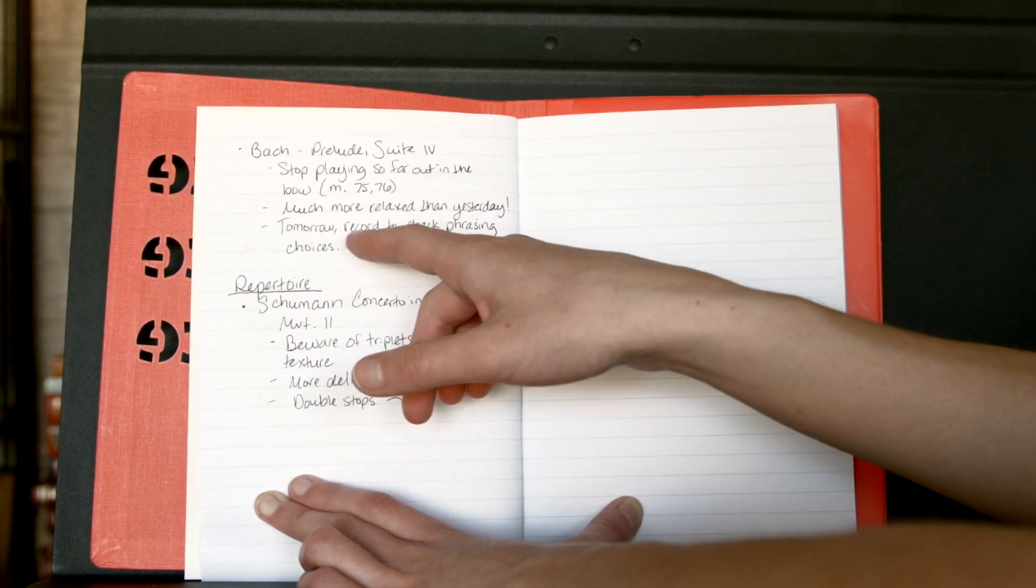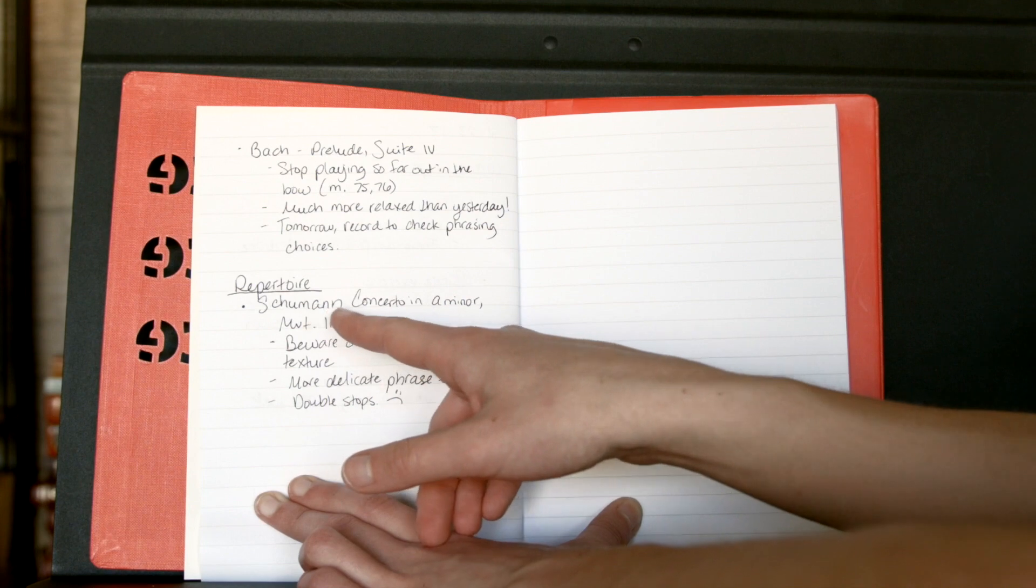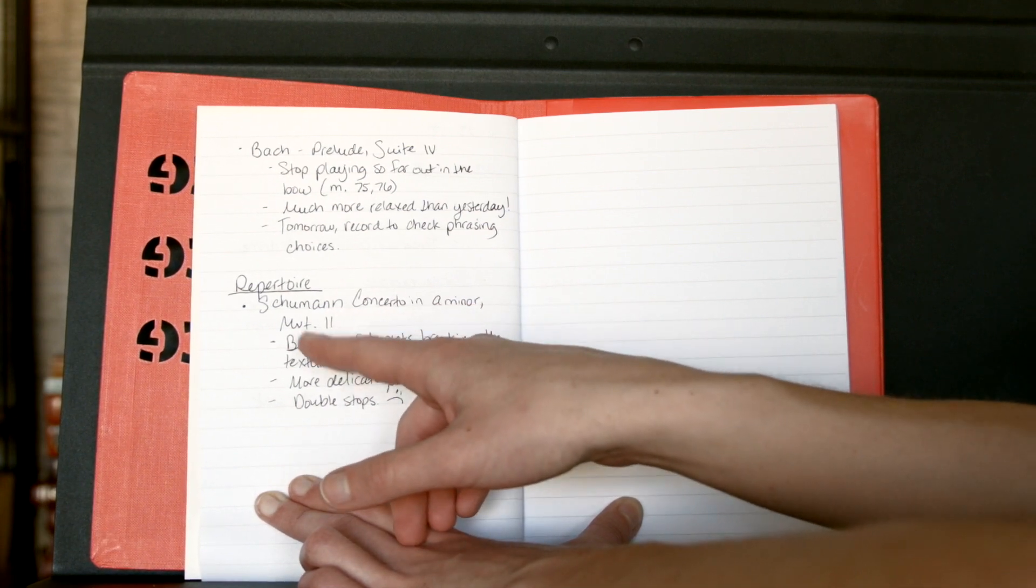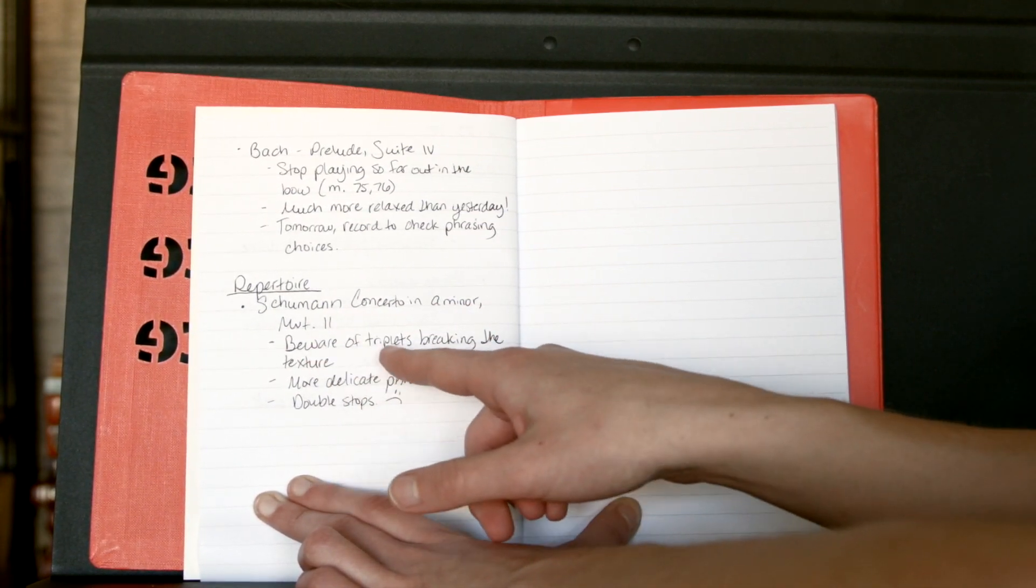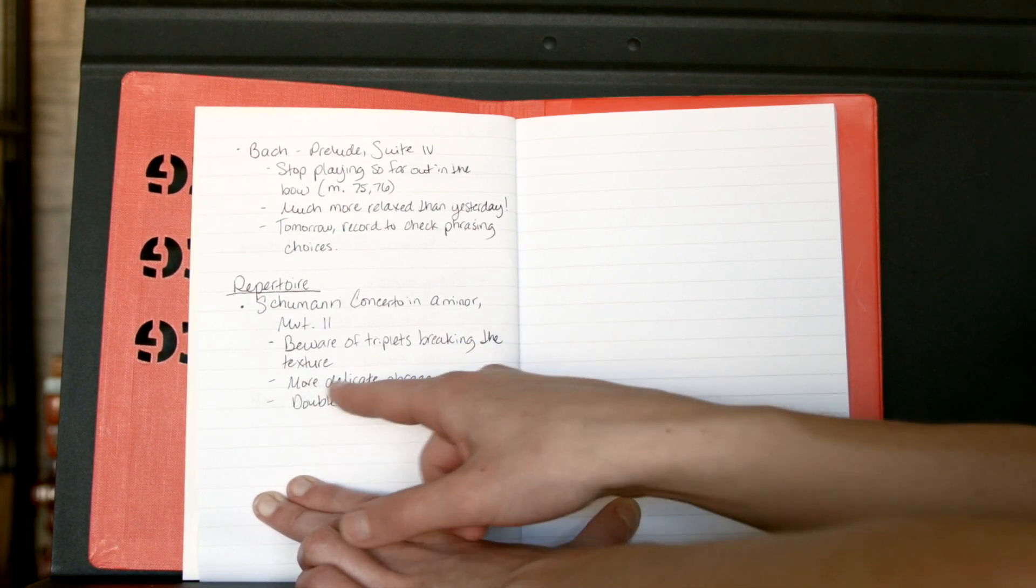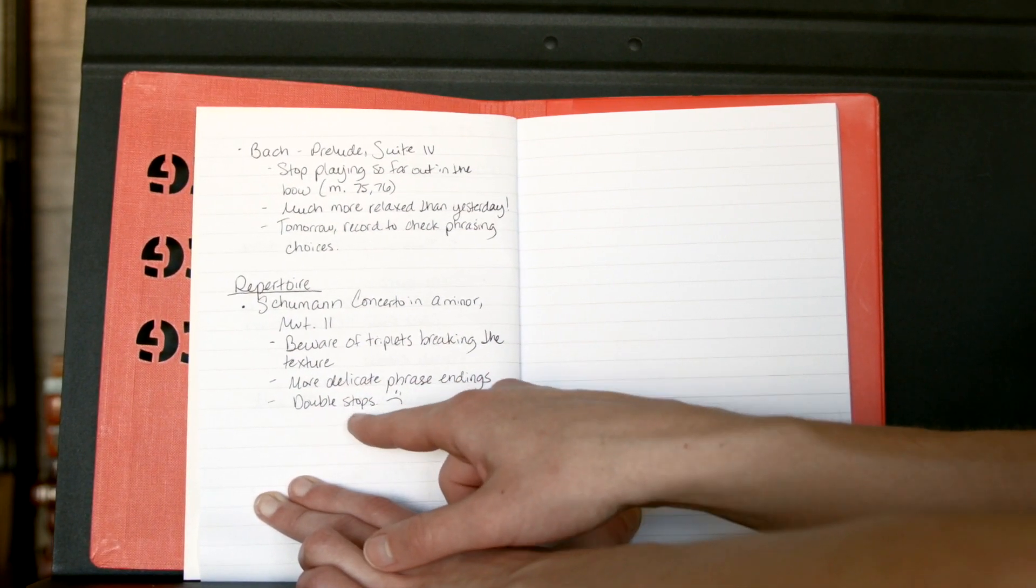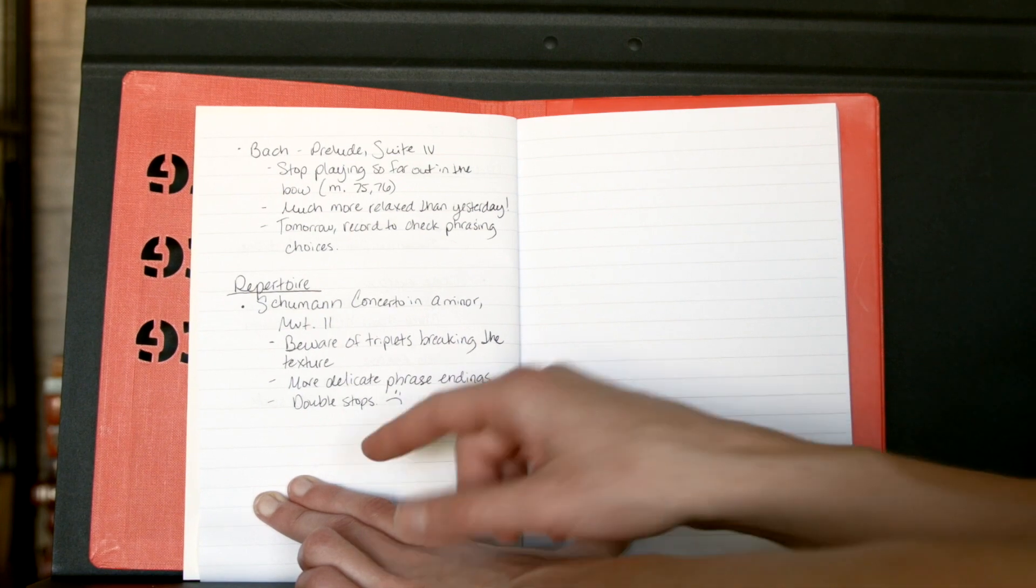Repertoire: for the Schumann Concerto in A minor, movement two. So here, beware of triplets breaking the texture—don't let those pop out. More delicate phrase endings. And then, things that you need to work on and that maybe you're not happy about that day, but things that will get better with time, so double stops.